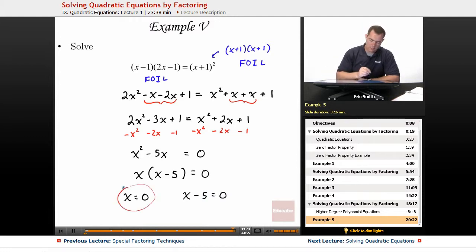Looks like one of them is already solved for us, so we'll just leave that as it is. And the other one will add 5 to both sides, and then we will get our second solution that x must equal 5.